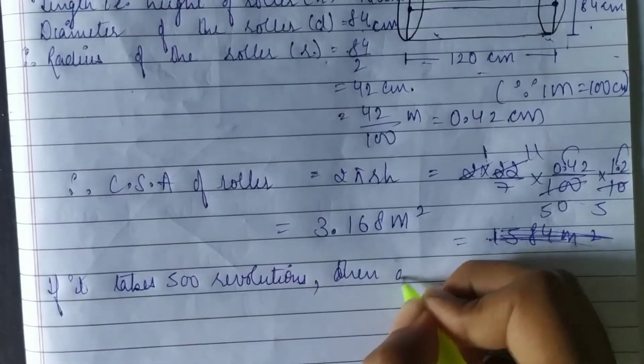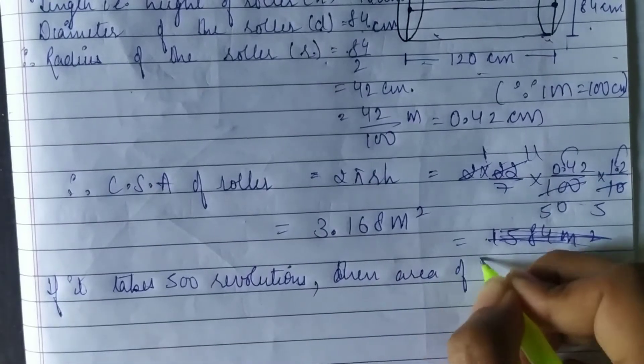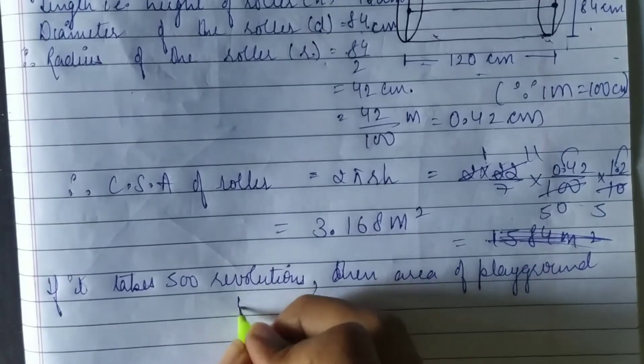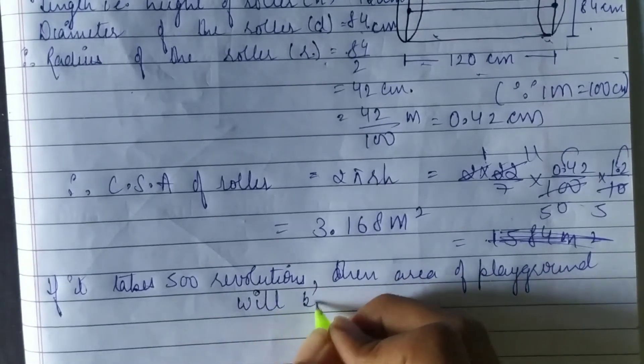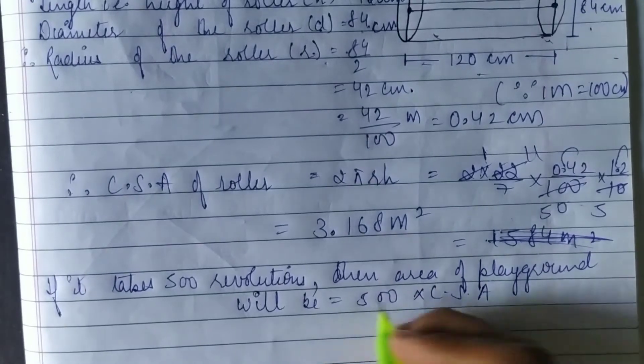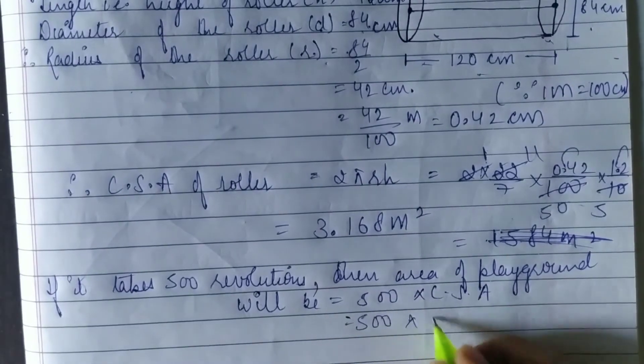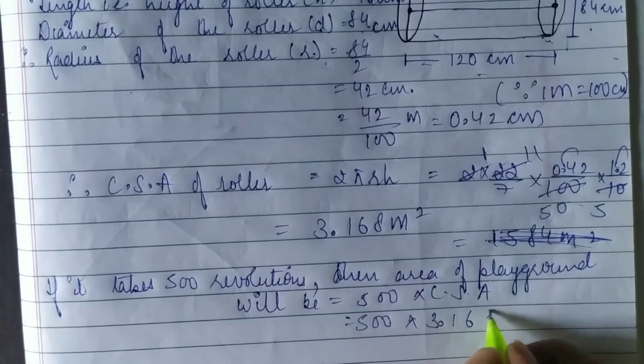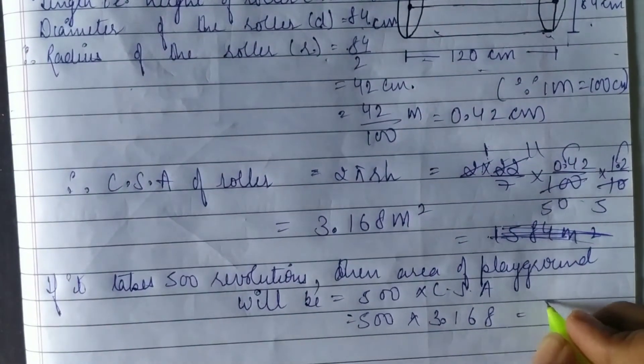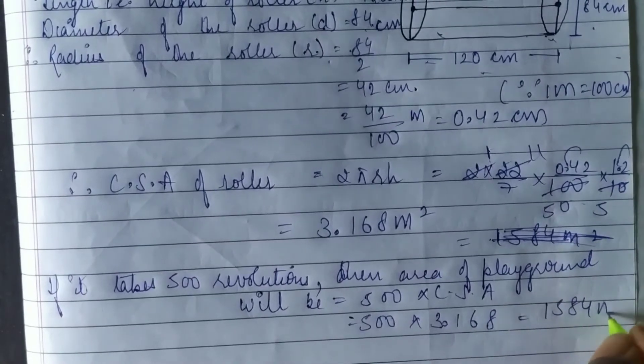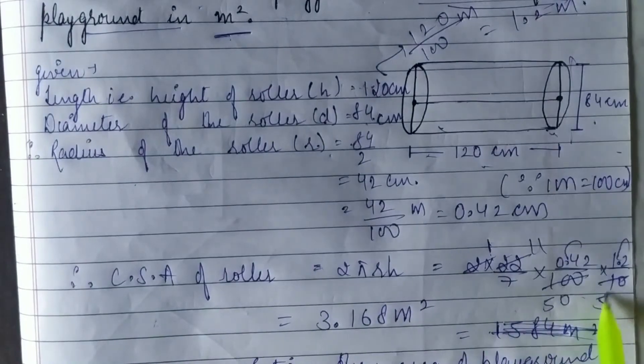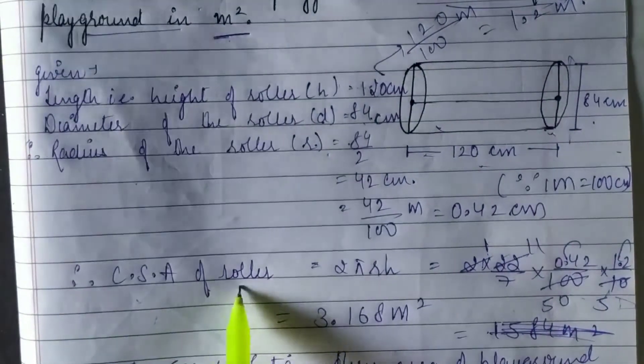If it takes 500 revolutions, then the area of the playground will be 500 multiplied by the curved surface area, which means 500 times 3.168, which gives 1584 meter square approximately.